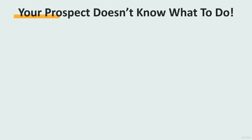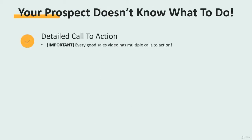Your first call to action usually appears right after you reveal the price. Then you do the guarantee and some objection-killing, add some scarcity, and then you do another call to action.